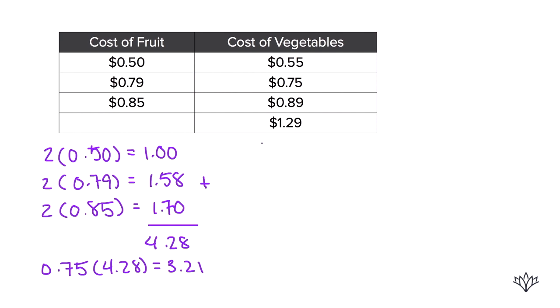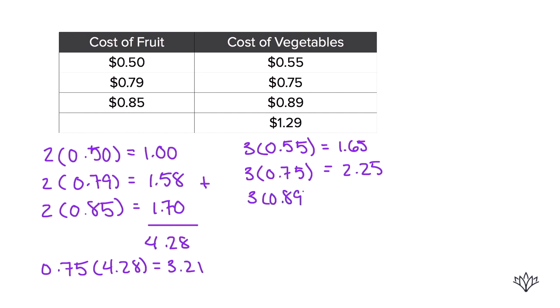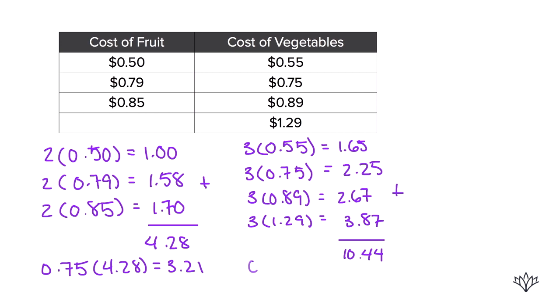Now let's work with three of each vegetable. Three times 55 cents is $1.65. Three times 75 cents is $2.25. Three times 89 cents is $2.67. Three times $1.29 is $3.87. Adding those together gives us $10.44. The vegetable discount is 40%, so you're only paying 60% of the price. That's 0.60 times $10.44, which gives us $6.264.